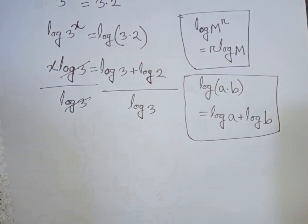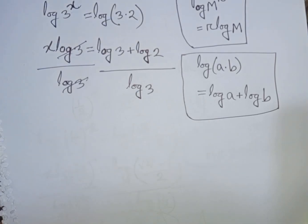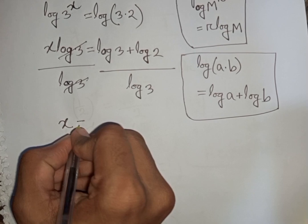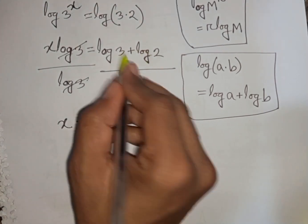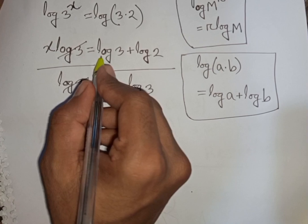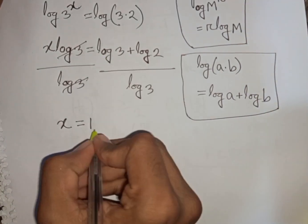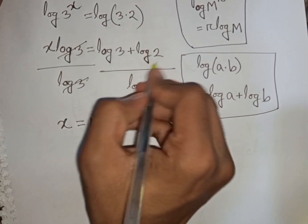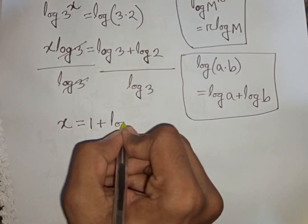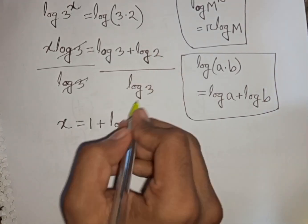This log 3 and log 3 will be cancelled. So we have x is equal to log 3 over log 3 plus log 2 over log 3. That means 1 plus log 2 over log 3.